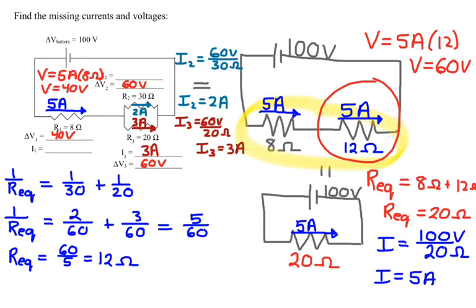The next thing we might do is check to see if the loop rule is obeyed. So if I draw a closed loop like right here, the voltage of my battery, which is 100, minus 40, minus the voltage on R2, which is 60, has to add up to 0. And so 100 minus 40 minus 60 does in fact equal 0.